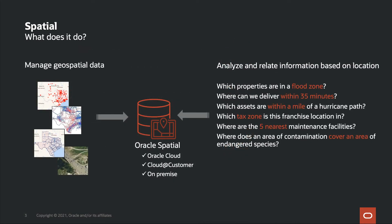Oracle Spatial allows us to natively manage geospatial data — for example, points that might represent geocoded address locations, linear features like transportation or utility network alignments, polygon or regional features such as sales territories, marketing areas, or zip codes, and other forms of geospatial data such as geographically referenced aerial imagery and drone imagery. All of this geospatial data is managed natively in Oracle Autonomous Database, and in fact across all Oracle Databases in the Oracle Cloud, within Cloud at Customer, and in on-premises databases.